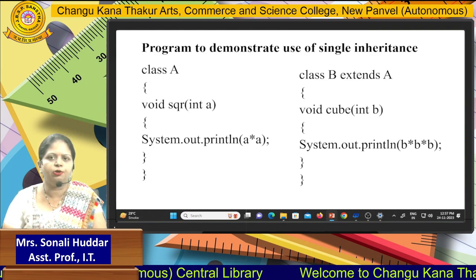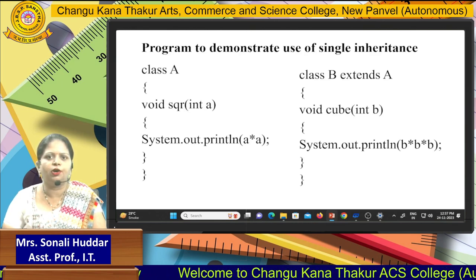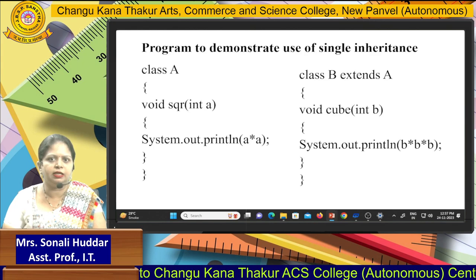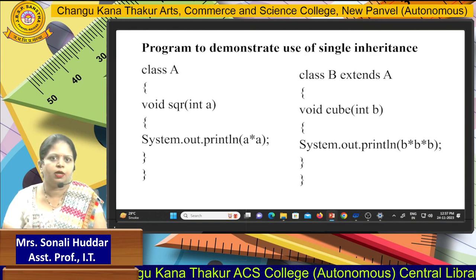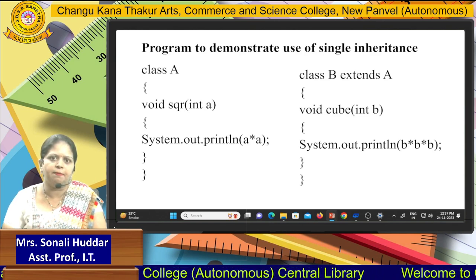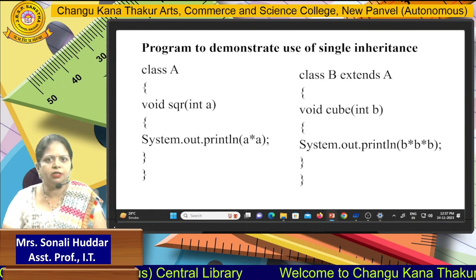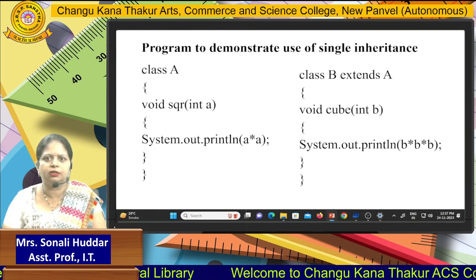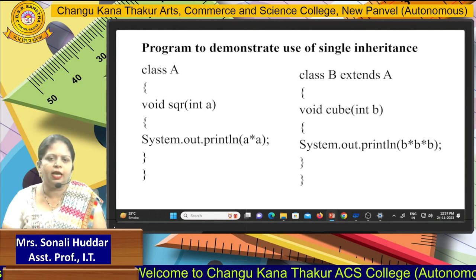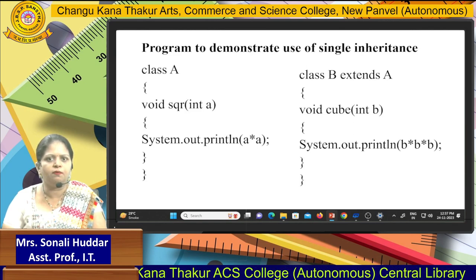We are going to create two classes: class A and class B. First, concentrate on class A. In class A, I am creating one method called square. So class A, void square int A — I am passing one integer variable here, and I am going to calculate the square of this variable using System.out.println. Then closing the square method and closing class A.